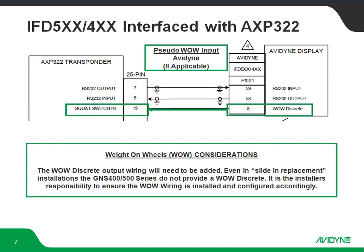Next, we've got our weight on wheels discrete. The AXP322 is always recommended to use the pseudo weight on wheels out of the IFD. What that will do is transition your squat switch input on the AXP322 at around 35 knots GPS ground speed. The idea behind that is there are two pieces that have to transition: regular mode S, mode A, mode C stuff transitioning from standby to altitude mode, and also the ADS-B portion of the data that has to transition from ground to air. So it's best to just use the IFD pseudo weight on wheels output so those transitions happen at the same time.